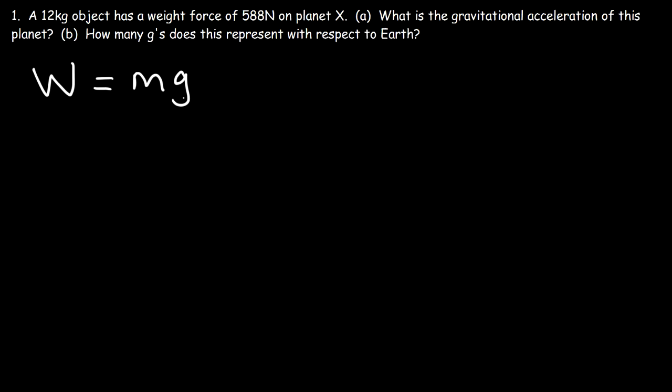Weight is equal to mg. So the weight of the object is 588 Newtons. The mass is 12 kilograms. Our goal is to find the gravitational acceleration denoted by the letter g.